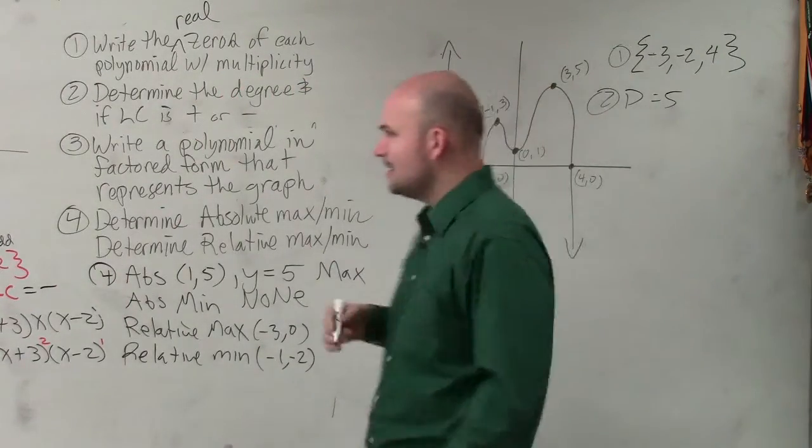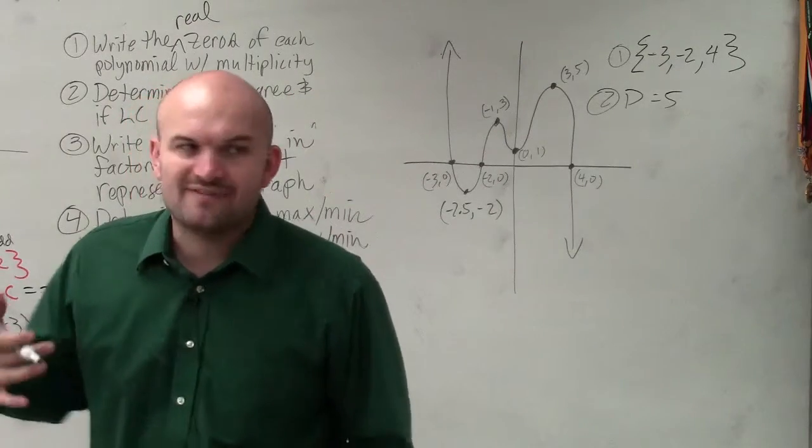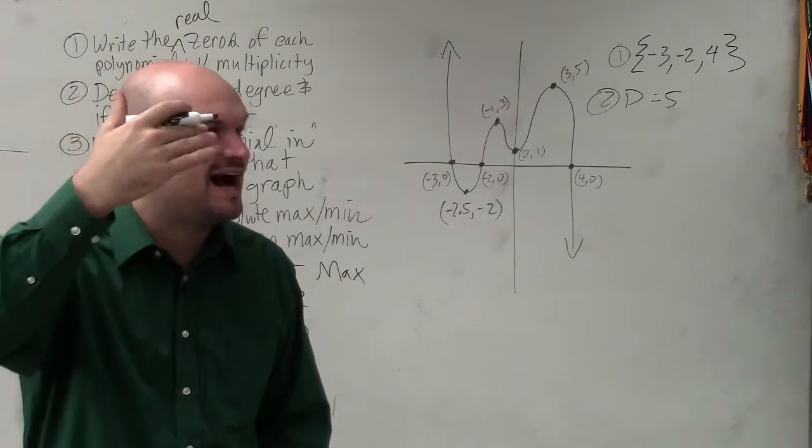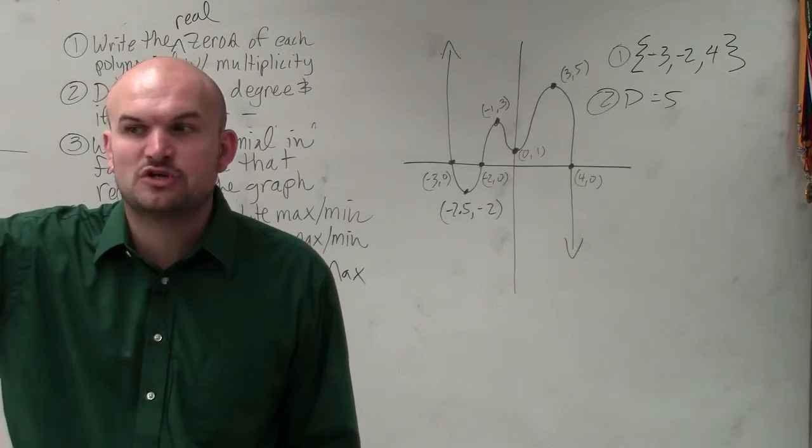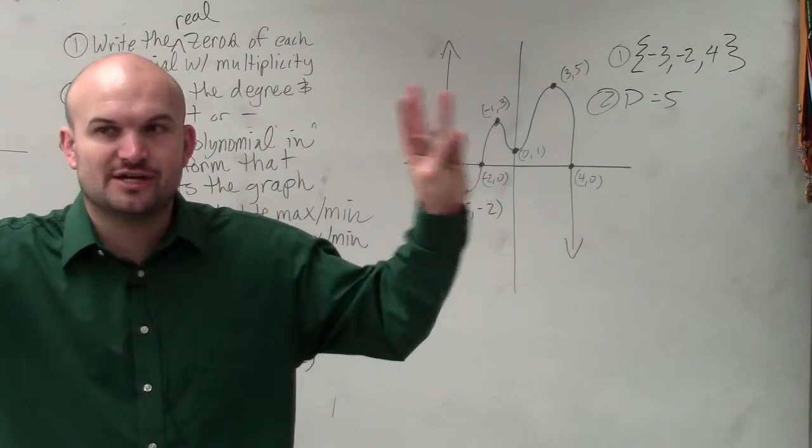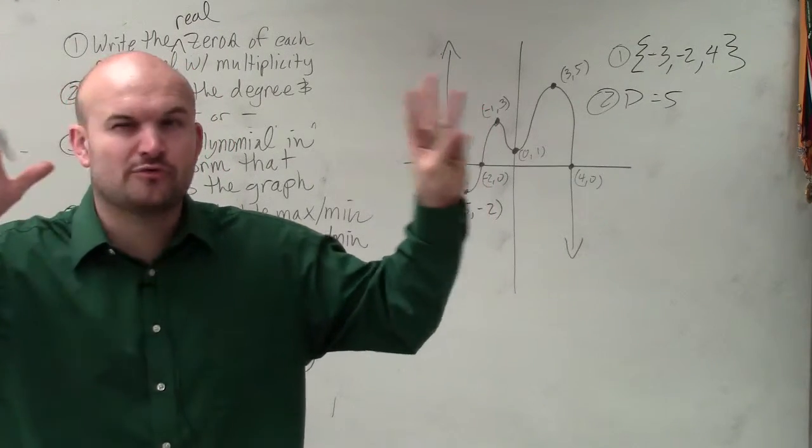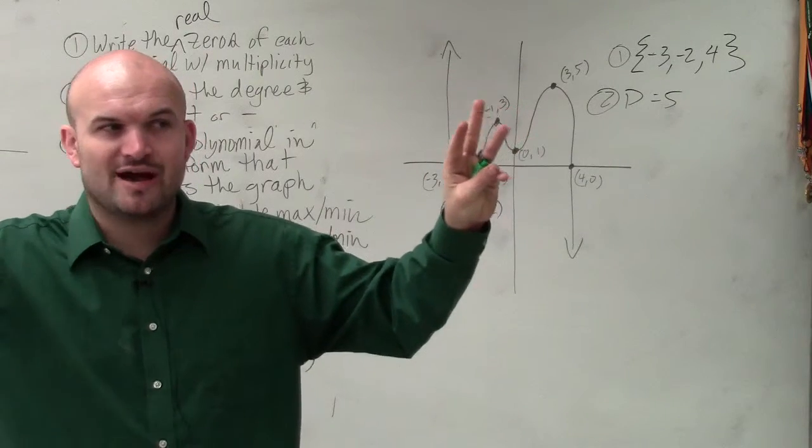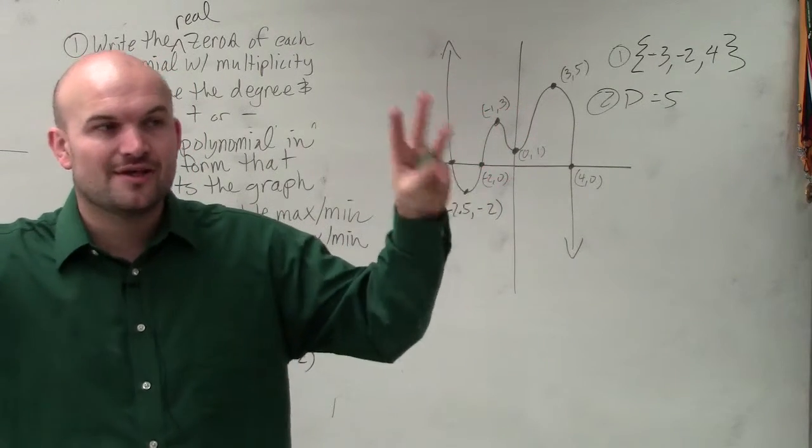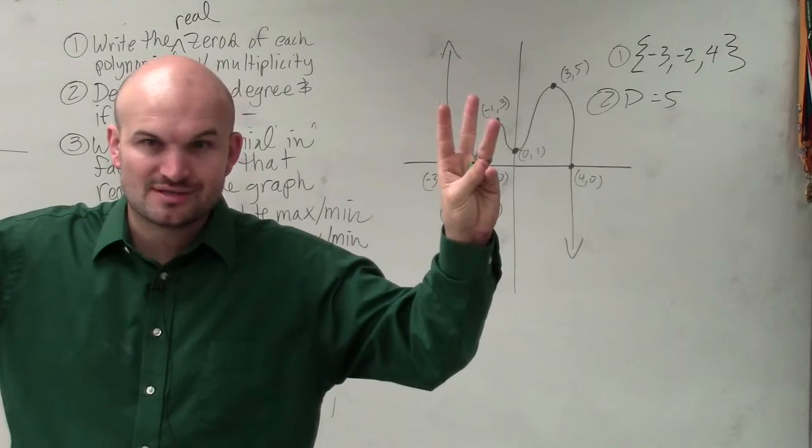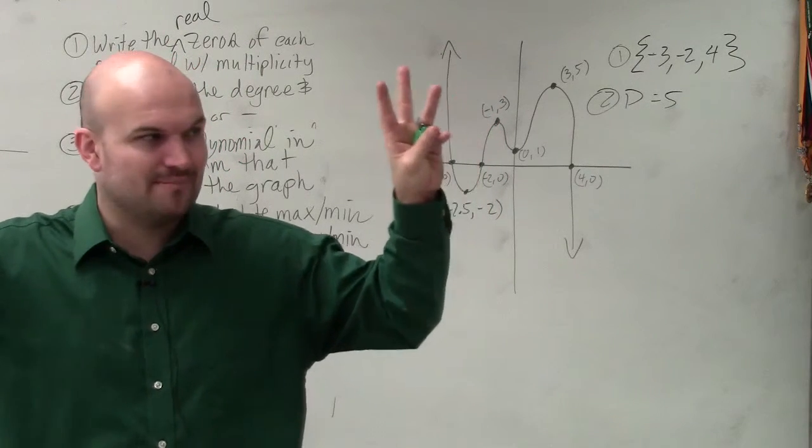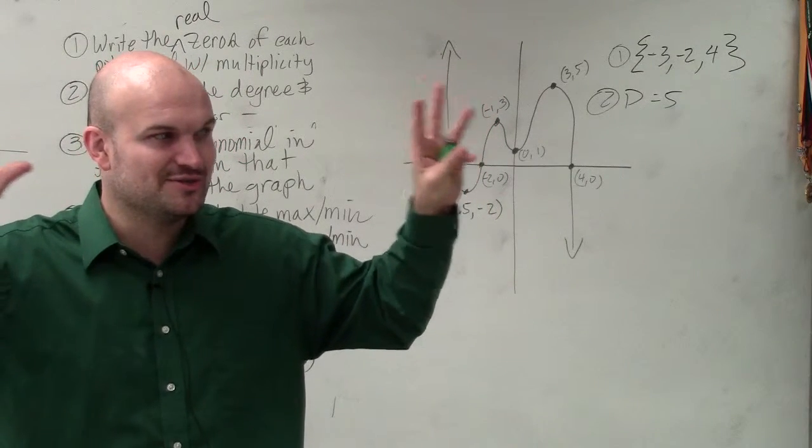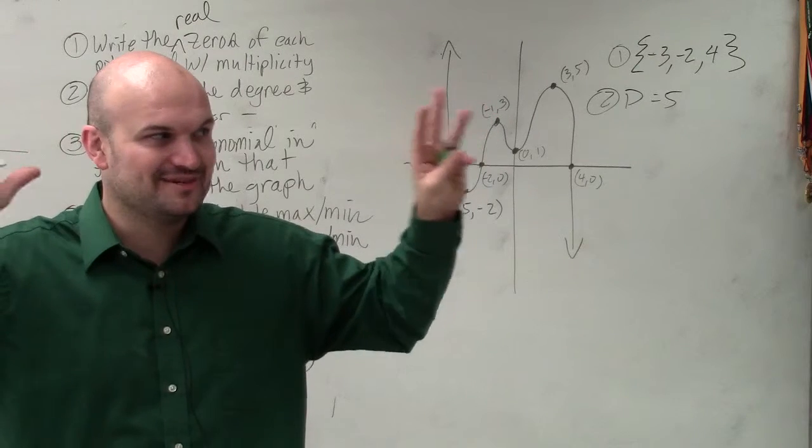Now, how does this make sense? If I have a degree of 5, that means there's 5 total solutions. I have 3 x-intercepts, which tells me there's 3 real solutions. So I have 5 total solutions, 3 real solutions. Then, I'm missing 2 solutions. What do those 2 solutions have to be?